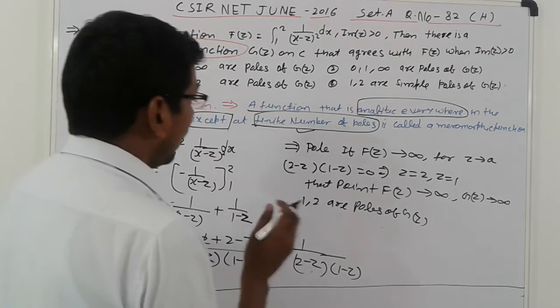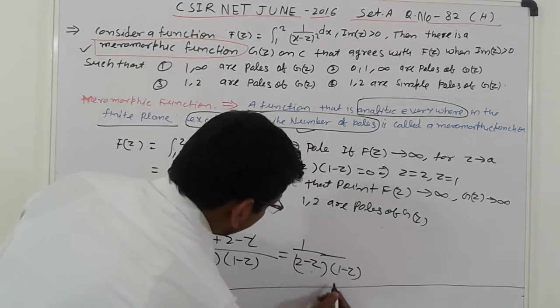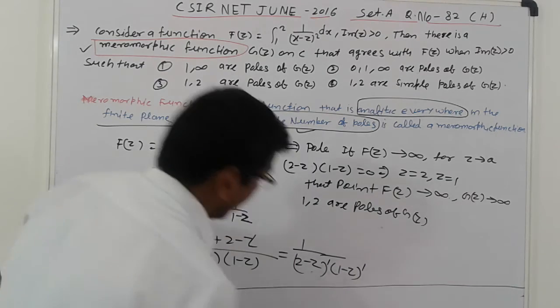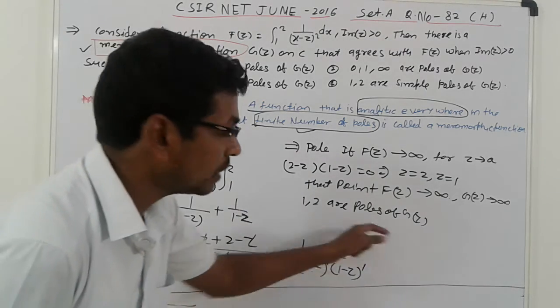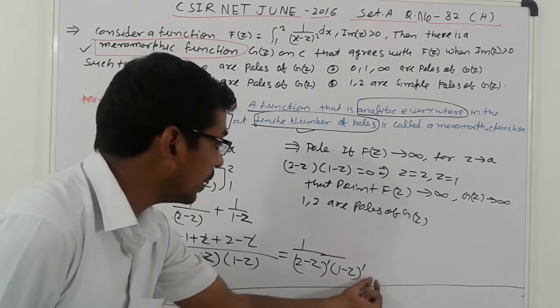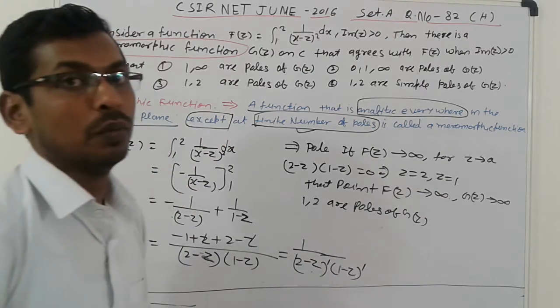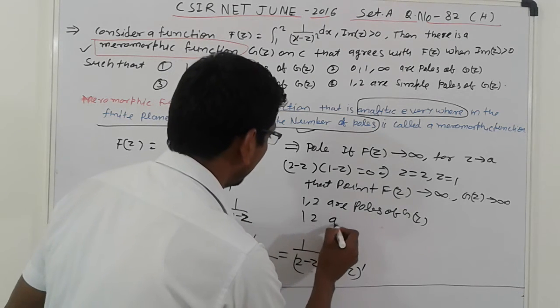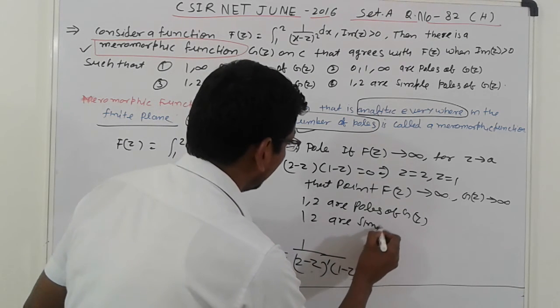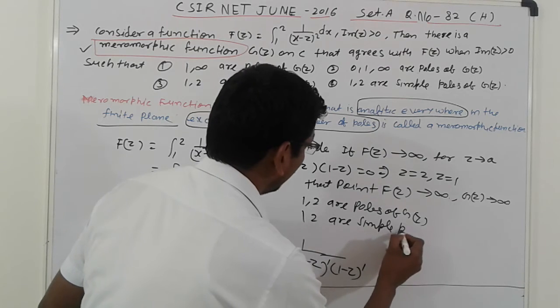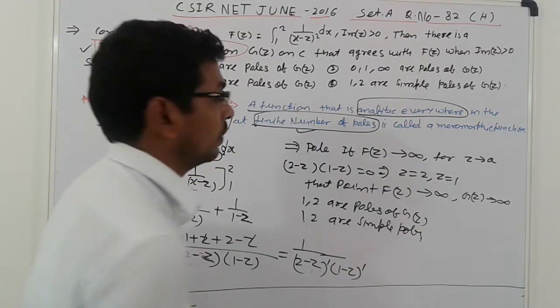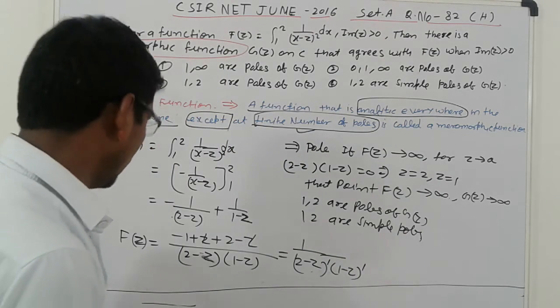So next, check it, which is power is one. Here power is one, it is linear. Power is one, it means linear. It means we can say that, which is a simple pole. One and two are the simple poles also. One and two are simple poles.